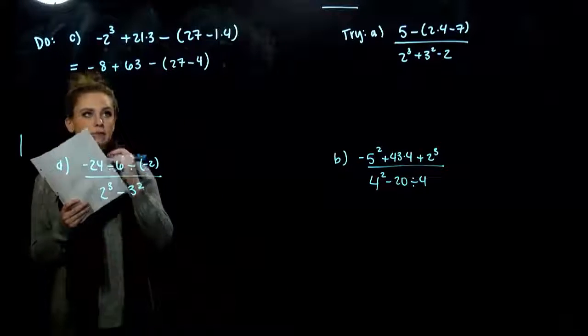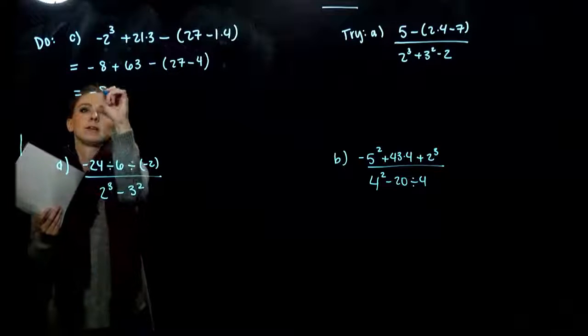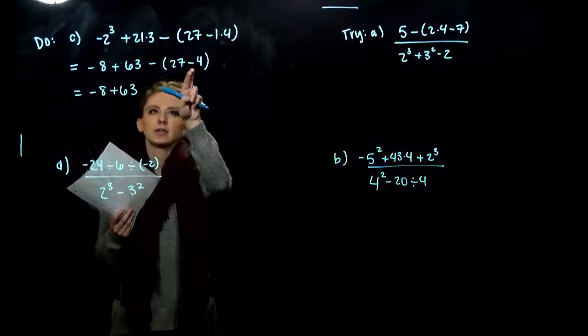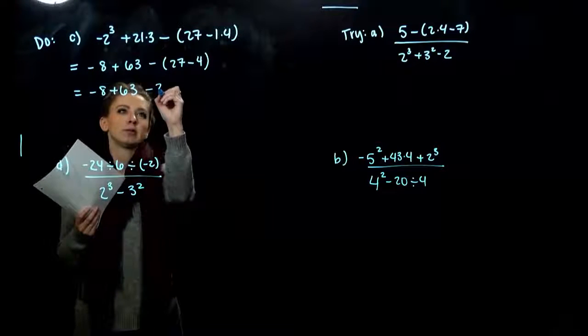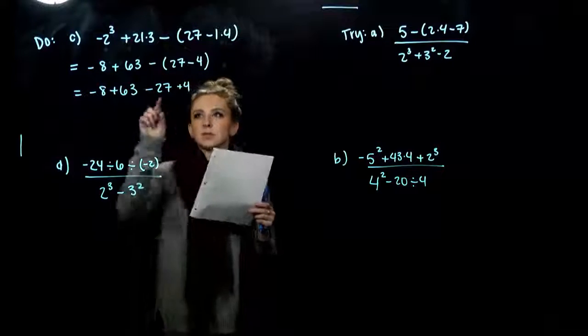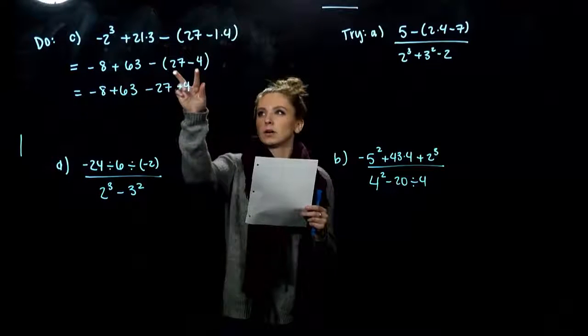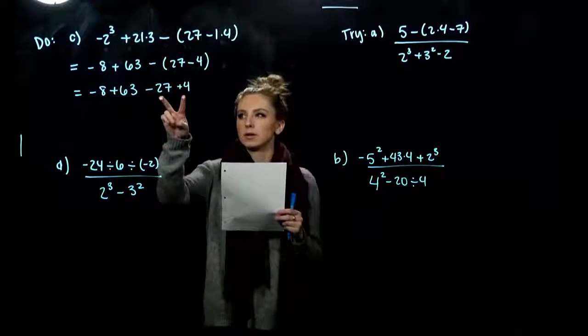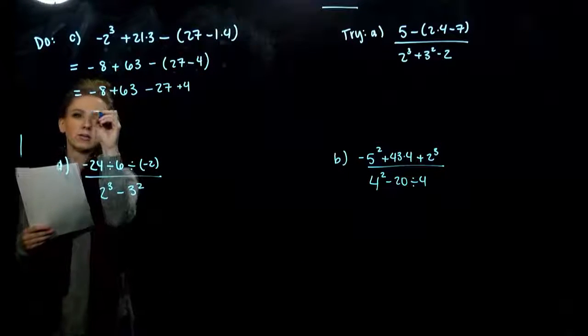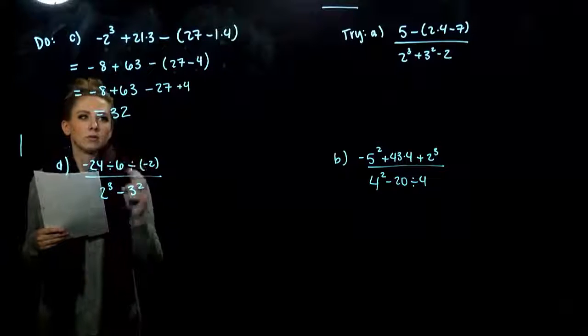So what do we have in here? Negative 8 plus 63. You can do it two different ways. You can combine these two together or you could distribute your negative into each of them. So you could have subtracted 23 or we could distribute minus 27 plus 4. Whatever way I'll get you there. It doesn't matter altogether. We're left with 32.